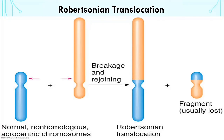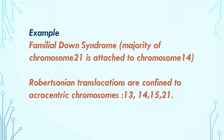Robertsonian translocation is a special pattern involving two acrocentric chromosomes, also called centric fusion. The break occurs close to the centromere, affecting the short arms of both chromosomes. The transfer of segments leads to one very large chromosome and one extremely small one, and the small fragment is usually lost. An example is familial Down syndrome.